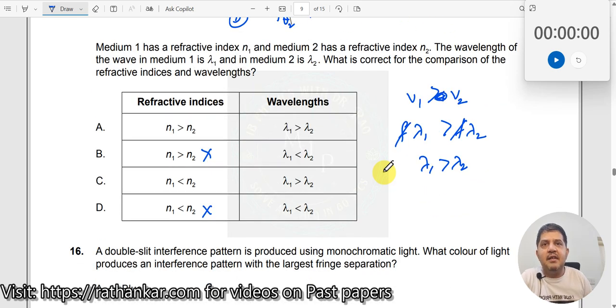Now we have lambda 1 greater than lambda 2 is here, n1 less than n2 here. C is the right answer.